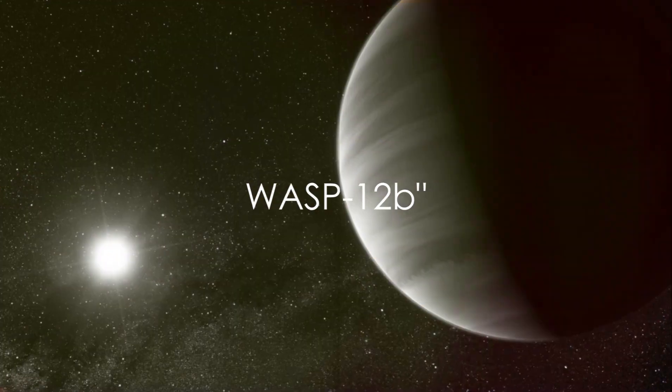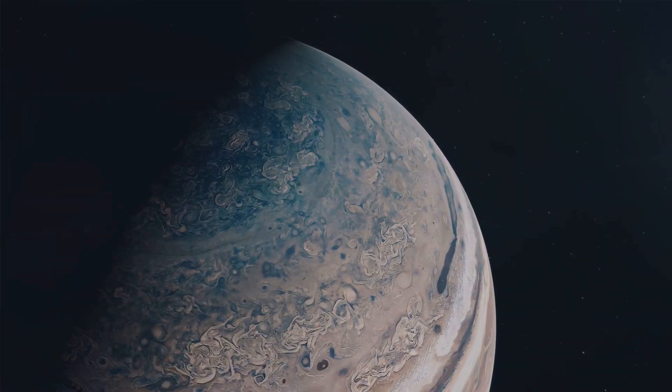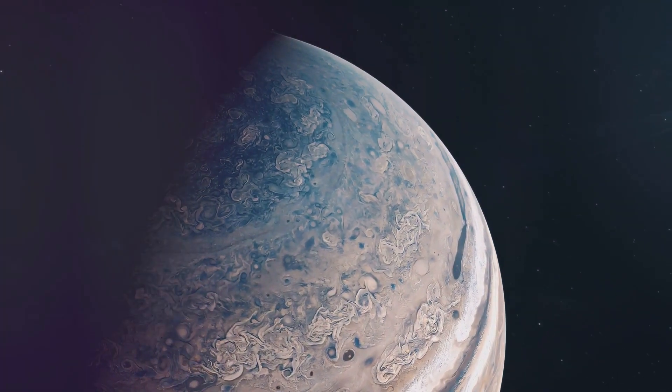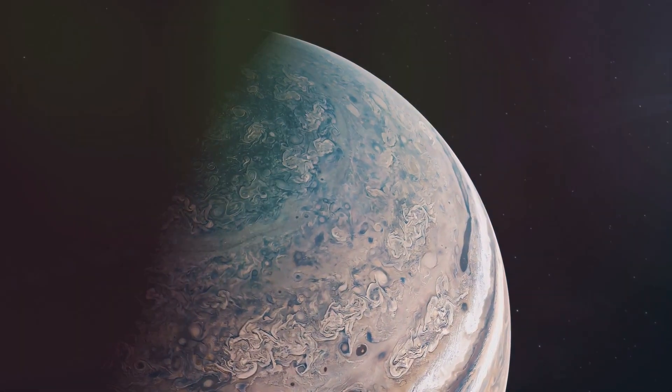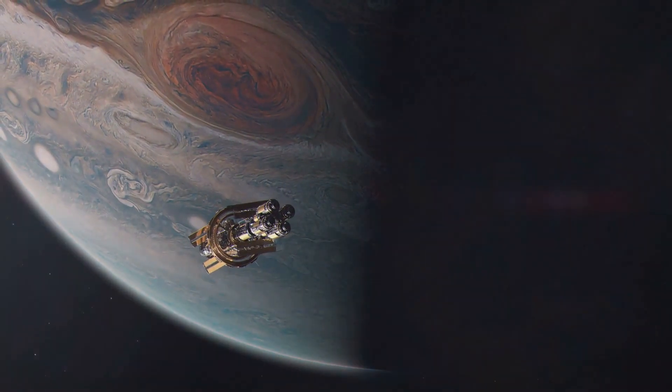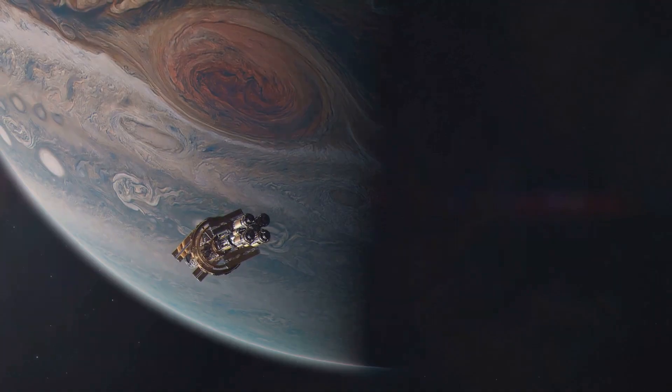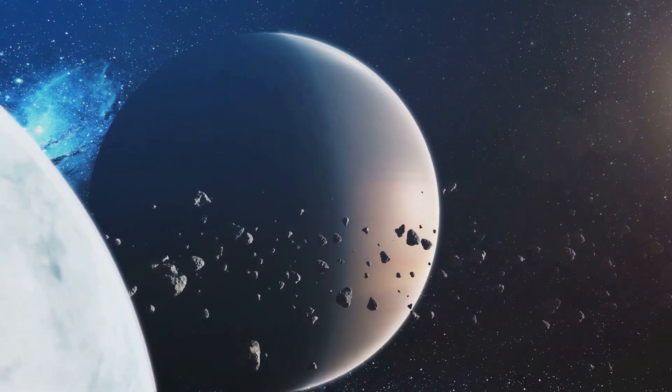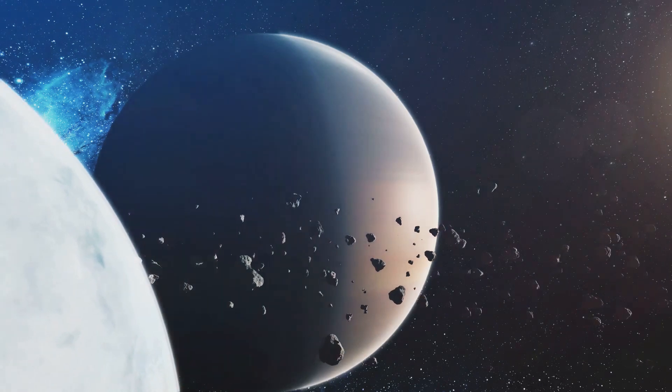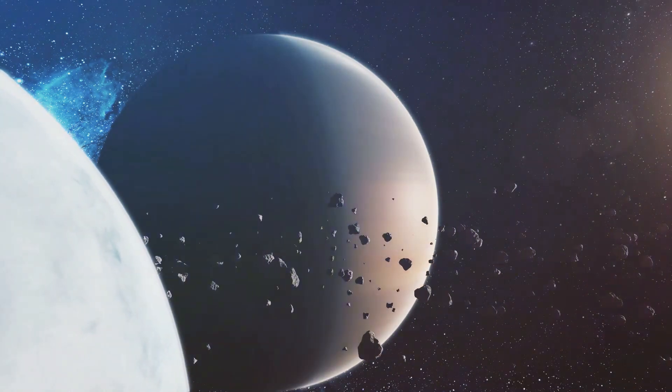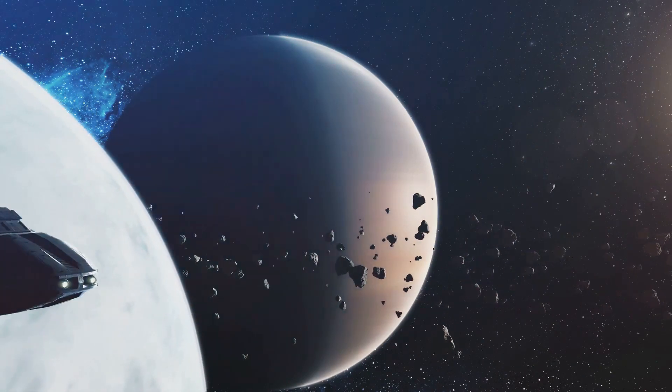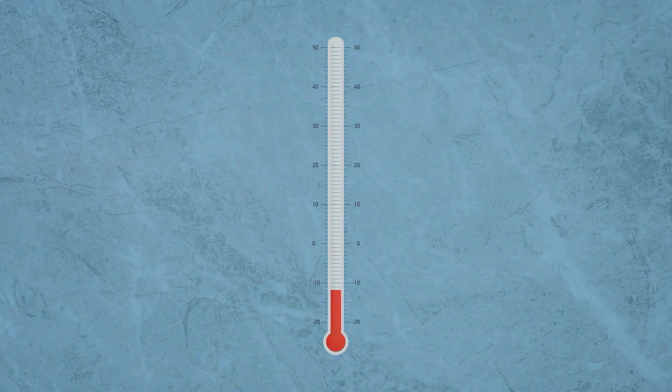Securing the third spot, we have WASP-12b, a planet that's being devoured by its own star. This gas giant is one of the most intriguing exoplanets in our galaxy. WASP-12b is located in an alarmingly close orbit to its star, a mere 2 million miles away. To put this into perspective, that's over 20 times closer than Mercury is to our Sun. This extreme proximity leads to scorching hot temperatures on the planet, averaging around 2,500 degrees Celsius. That's hotter than some stars.